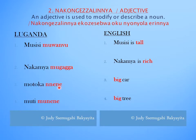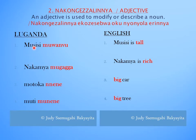More examples: Motoka neni — big car. Muti muneni — big tree. The words on the right are the adjectives; they are describing the noun. In the phrase Musisi muamvu, Musisi is the noun and muamvu is the adjective.